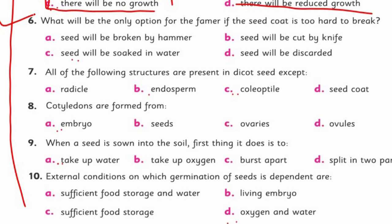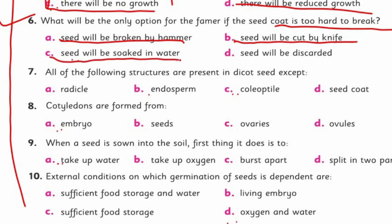Question six: what will be the only option for the farmer if the seed coat is too hard to break? As I told you earlier, they soak it in water for some time to make it a bit soft. The outer coat of the seed will then be broken. The seed will not be cut by a knife. The seed will be soaked in water — yes, that is the correct option — not discarded.